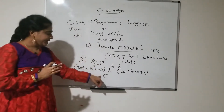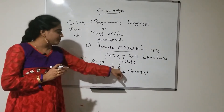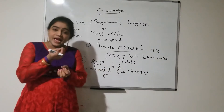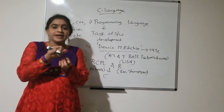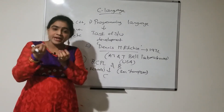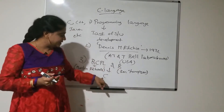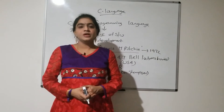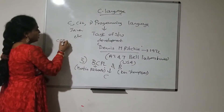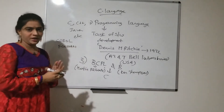Dennis Ritchie used the concepts of BCPL and B language, and he added some powerful new features. He also added data typing concepts to those two languages and named the new language C language. Before C language, we had some programming languages like COBOL and FORTRAN.